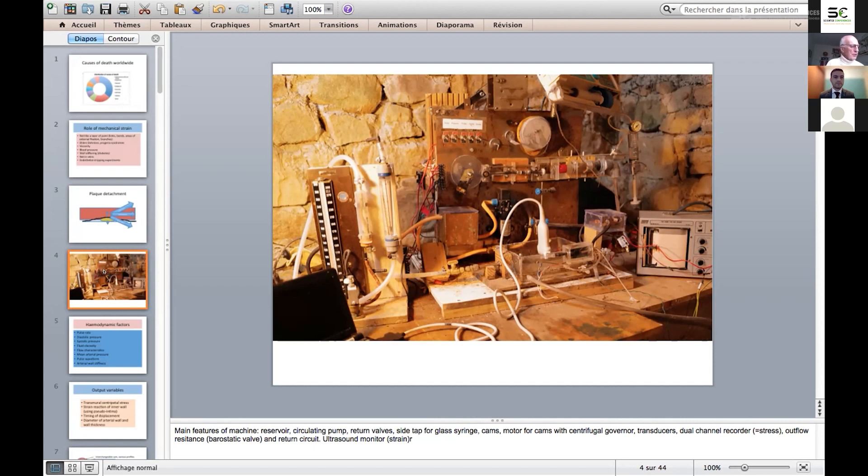In my retirement, I built this little machine, the object of which is to look at the way in which the principal mechanical variables might interact to give rise to the stresses that cause plaque dissection and initiate atherosclerosis. The machine enables us to vary the principal variables, such as pulse rate, blood pressure systolic and diastolic, and fluid viscosity.